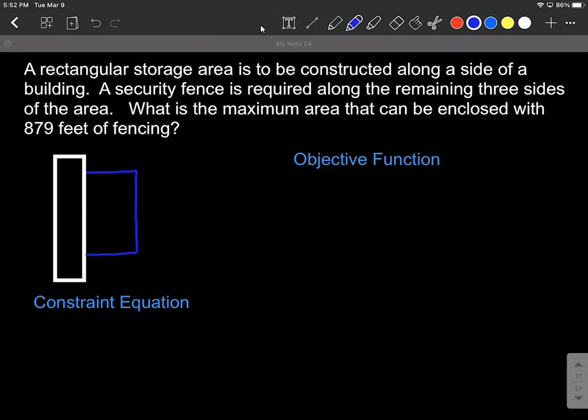Next up, we want to construct both an objective function - we're going to try to maximize our area, so that's our objective function - and we want to construct a constraint equation. You're looking for some number along the way in the word problem that's going to go into the constraint equation. The constraint equation has to do with that 879 feet of fencing.